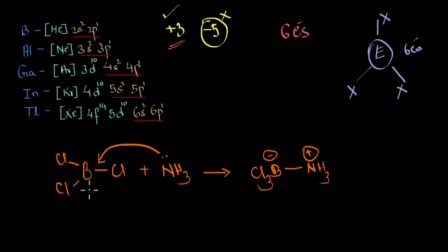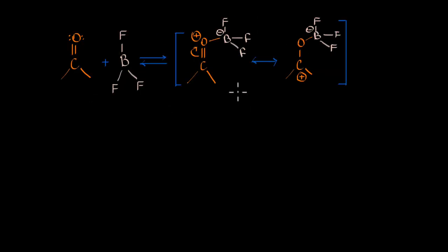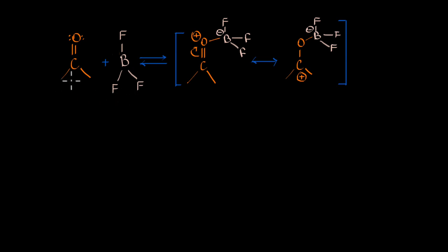Let's see how the ability of group 13 elements to act as Lewis acids helps us in organic reactions. In the first reaction, BF3 is reacting with a carbonyl compound — a compound with a C=O group. BF3 not only acts as a Lewis acid but also as an activating agent. What we mean by activating is that we need more positive charge on the carbon atom, which happens when the electron density on the pi electrons shifts — and that is exactly what happens here.